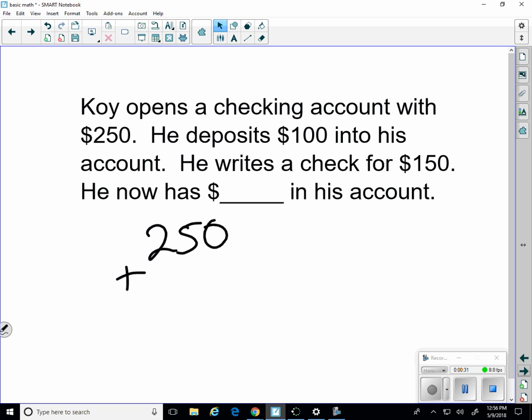So let's start with $250. We're going to deposit, so we're going to add $100 to our account. So now we have $350. And then we write a check for $150. So now we have $200 in the account as soon as that check clears.